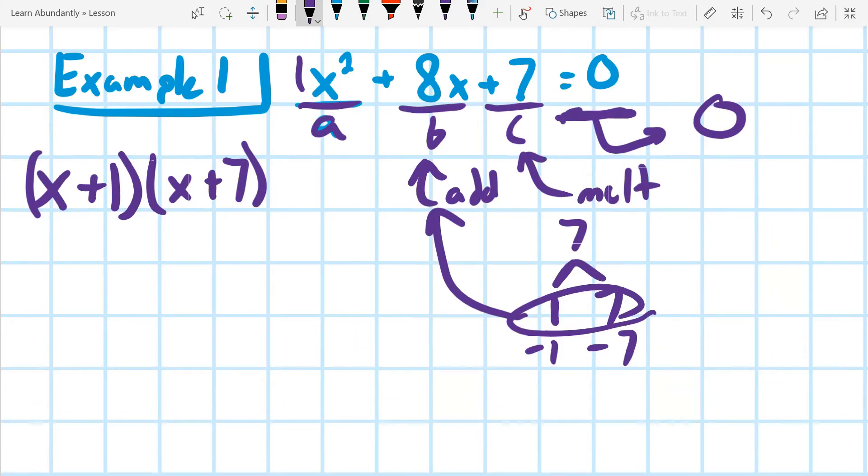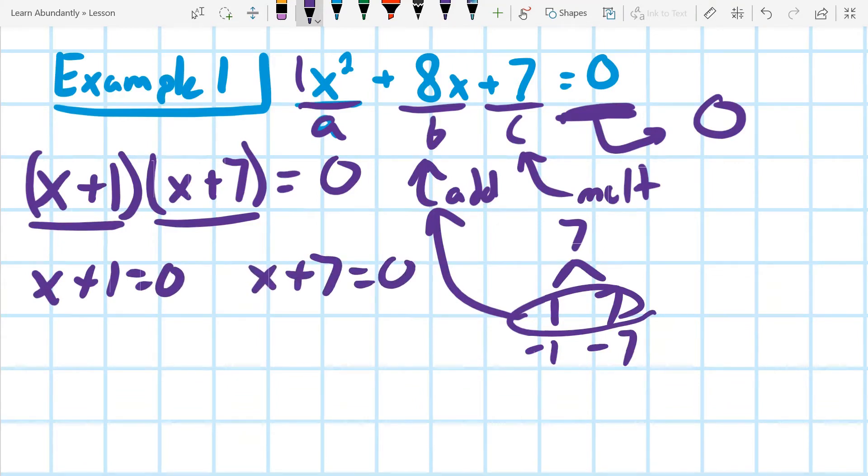And notice that this is still an equals. So we're going to say equal zero. Now that we have written as two factors equal to zero, we can go ahead and split this into two equations using the zero product property. x plus one equals zero. And then we can also say x plus seven equals zero. Subtract one from both sides, and I get x equals negative one.